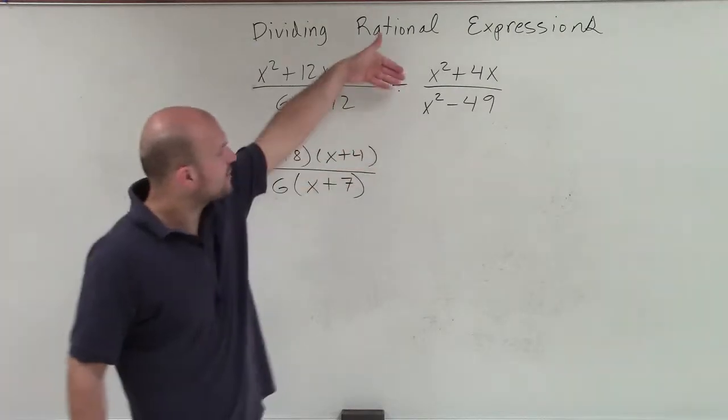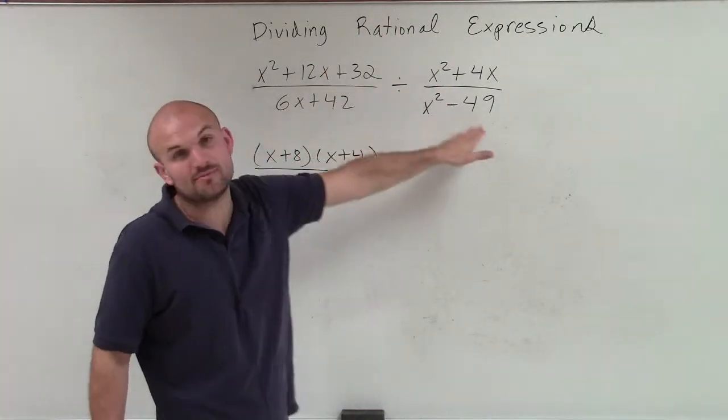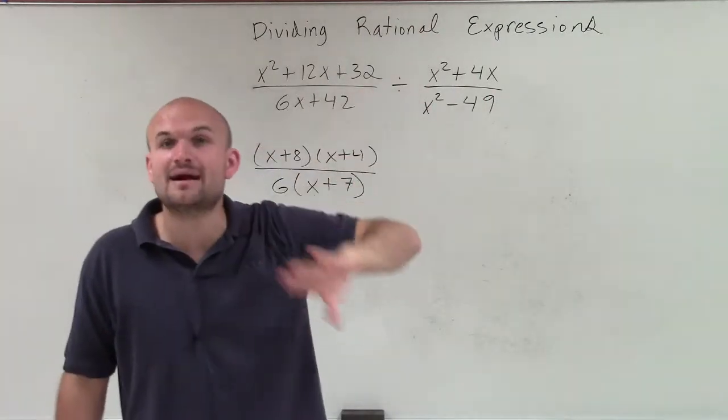OK? Now, when dividing, remember we're going to reciprocate this. So now my x squared minus 49 is going to be in my numerator, and my x squared plus 4x is going to be in my denominator.